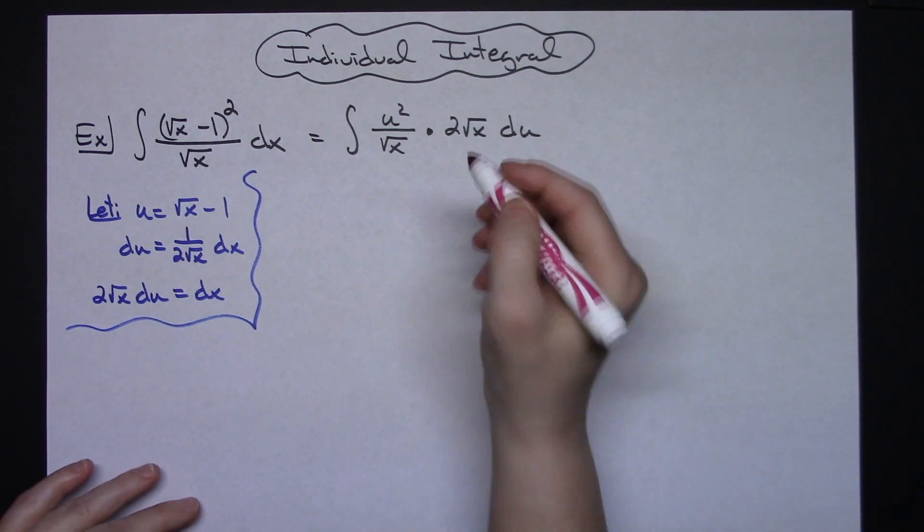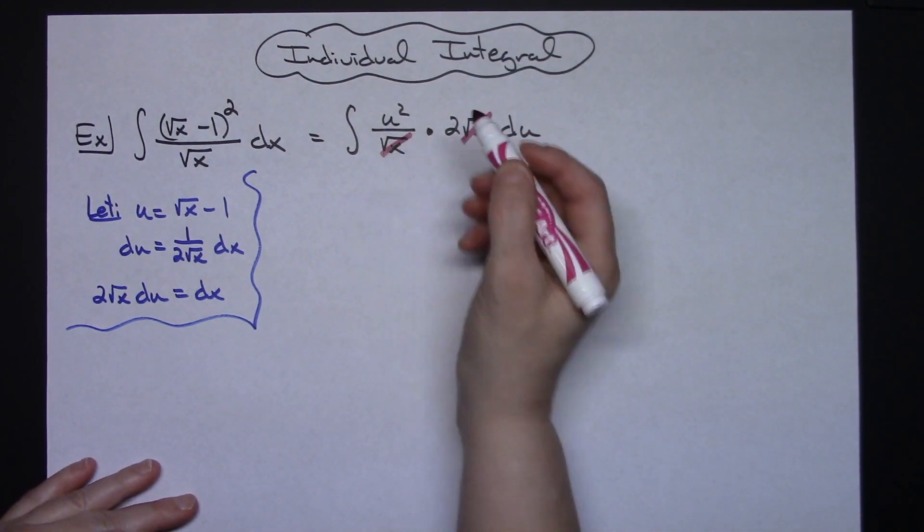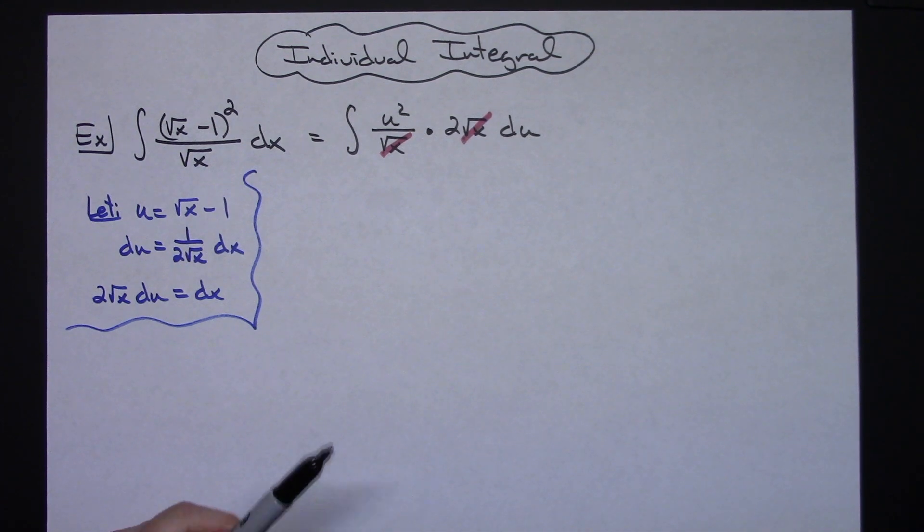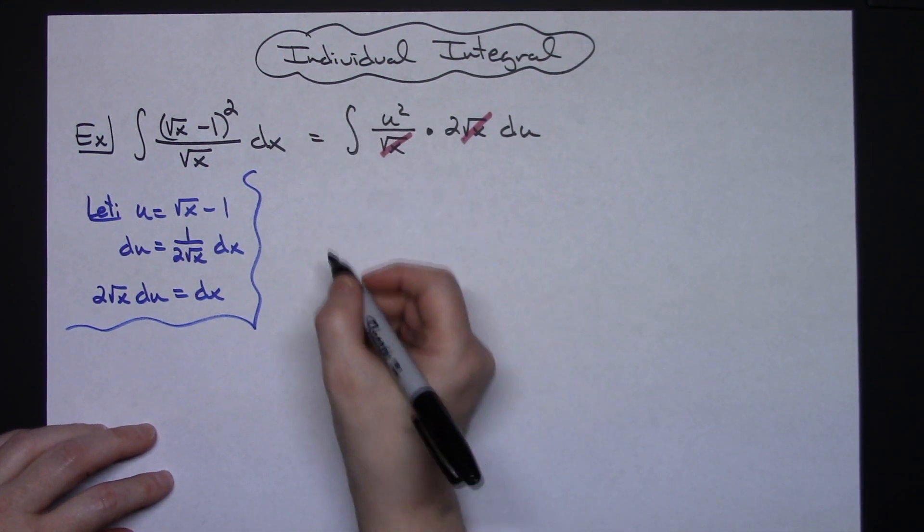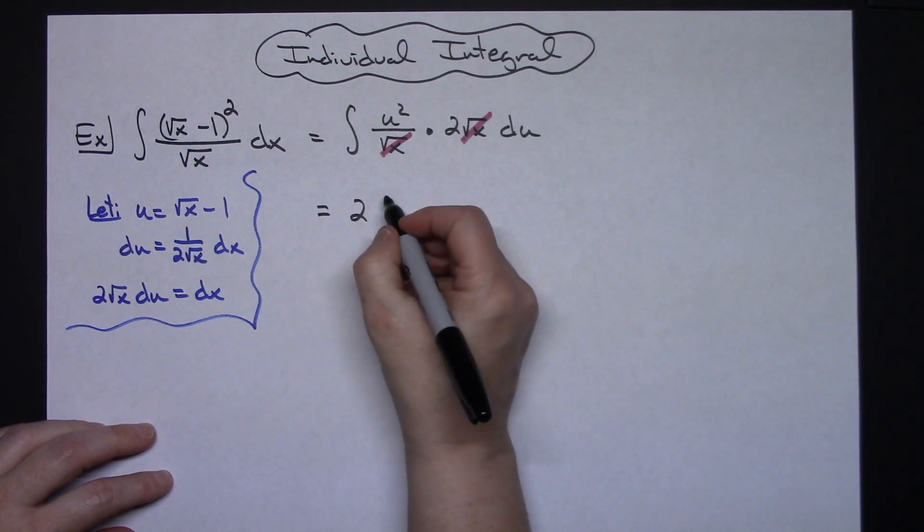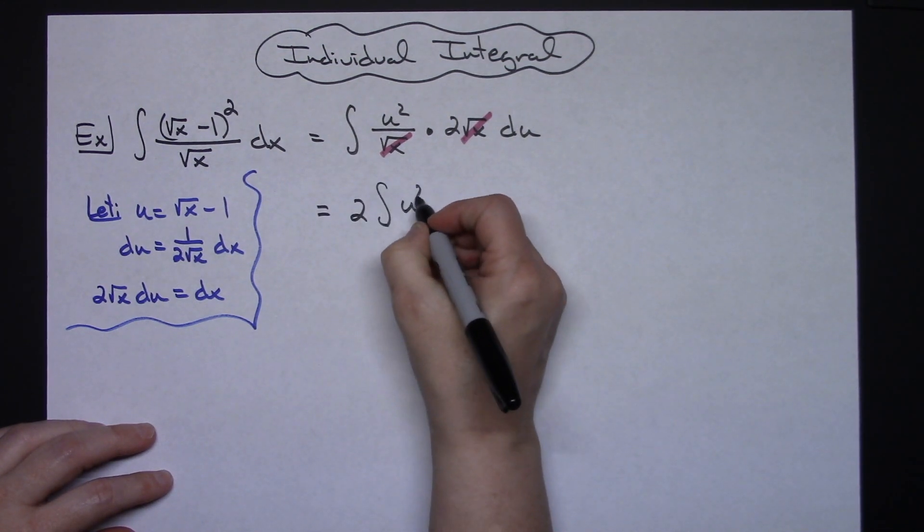So real nicely here the square root of x crosses out in both of those spots which is what we knew was going to happen. And we can pull that 2 out in front. So we'll have 2 times the integral of a u squared du.